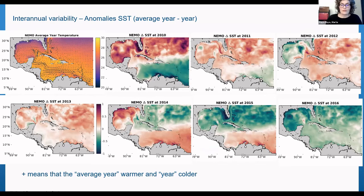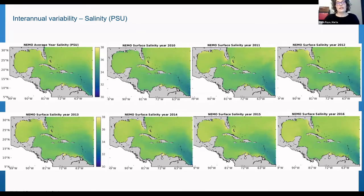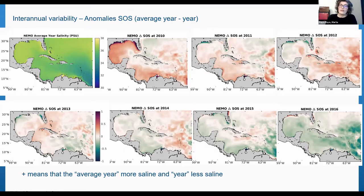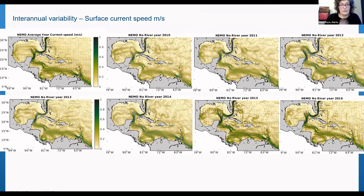Similarly for salinity, we have the average year and each individual year's anomaly, but again without really large differences. Positive red values mean the average year is more saline than the year being looked at. Salinity in the area ranges between 30 and 38 PSU, and anomaly differences between years are less than 1 PSU — basically less than 10 percent difference. For currents, there are some different patterns but nothing really striking in interannual variability.